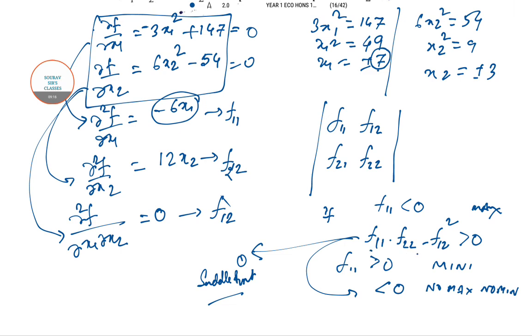But the formula I am just repeating again: f11 into f22 minus f12 squared has to be positive in order to have any max or minima. Then f11 is less than 0, so max. F11 is greater than 0, so minimum.